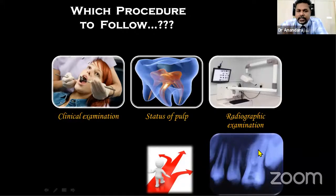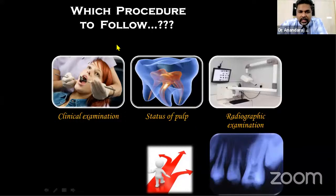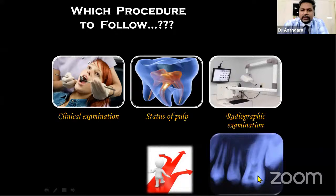Before choosing a treatment option, clearly evaluate clinical examination, patient history, and pulp status. Only then use the radiograph as a supporting tool. With all these assessments, you can determine which treatment option is appropriate for this particular case.